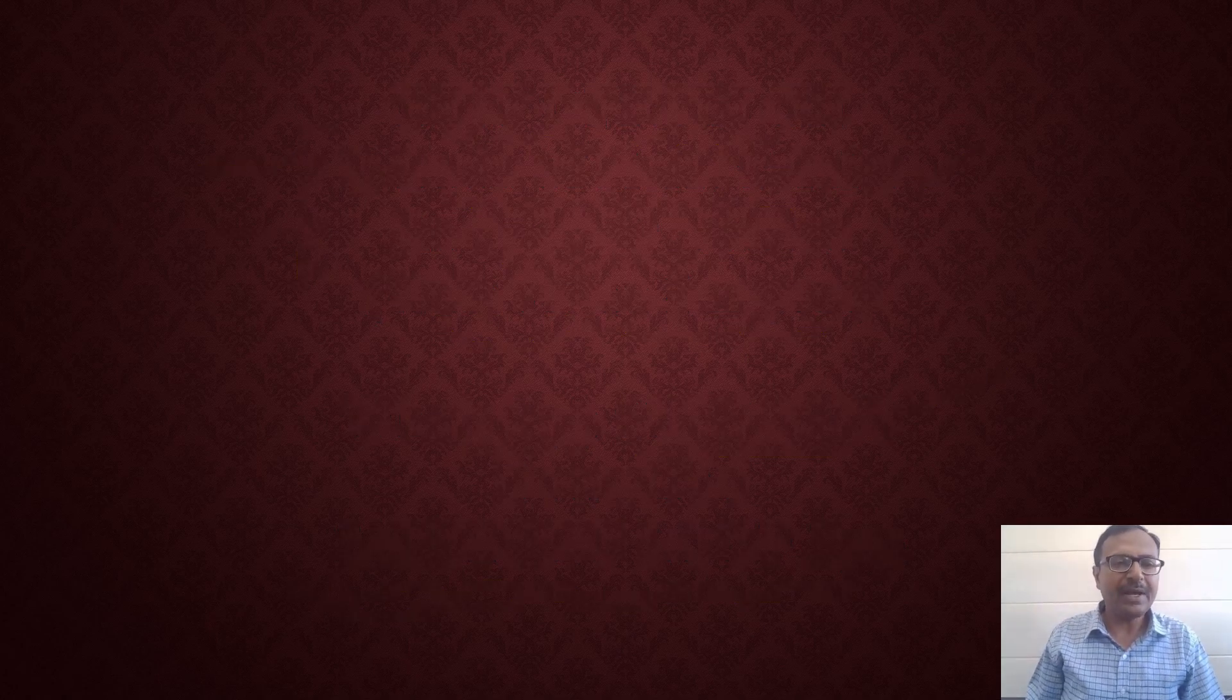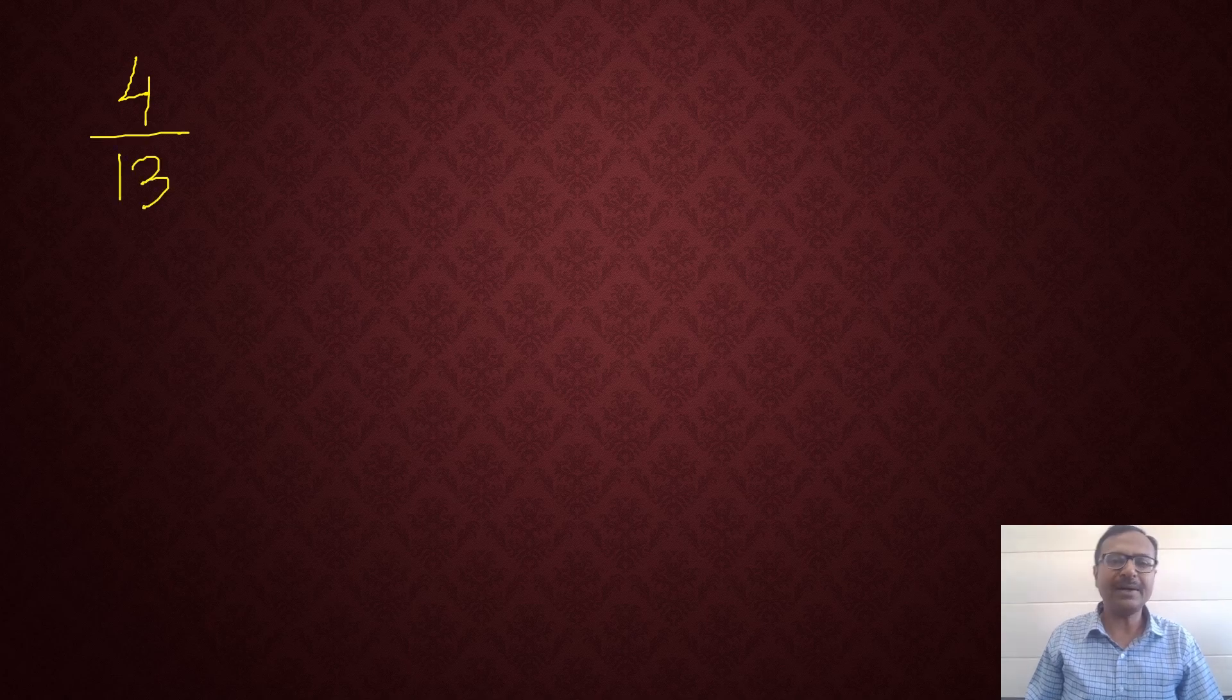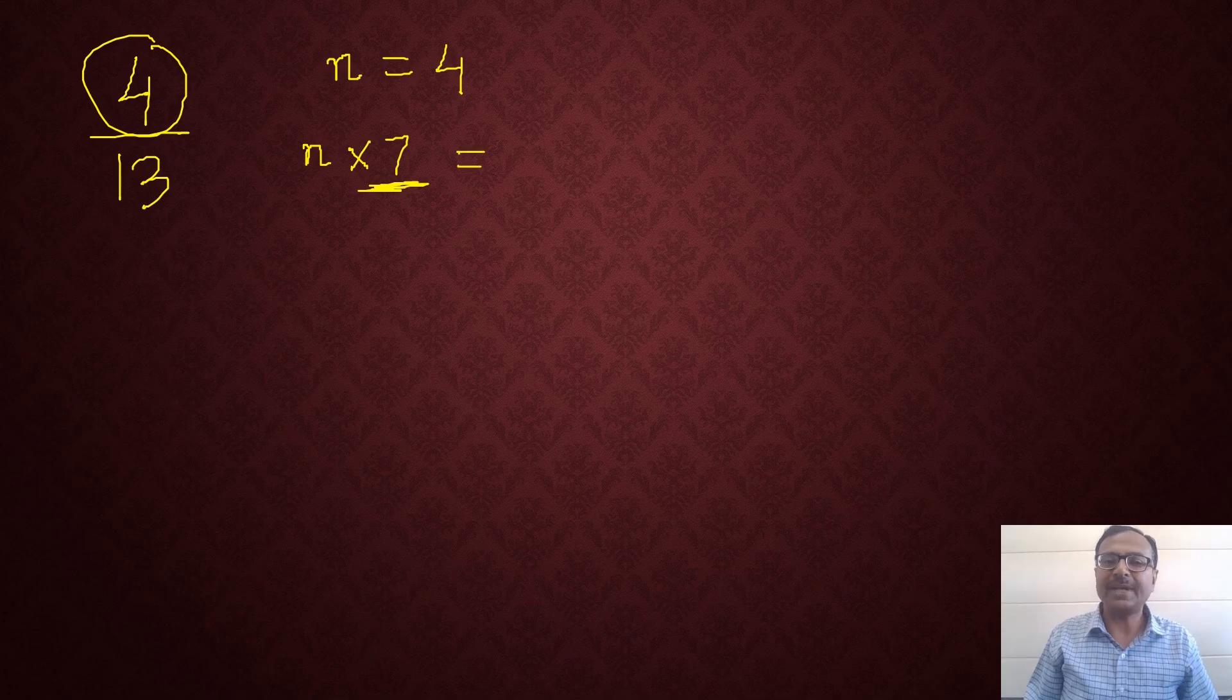Now, suppose we have to divide 4 by 13. 4 by 13 is a proper fraction. When you have to find the decimal representation of a proper fraction in which the denominator is 13, let's consider that the numerator 4 is represented by n. So n is 4. The first thing you are going to do is to multiply n by 7. This is fixed. That's the rule. Multiply the numerator by 7. So that gives you 4 times 7 which is 28.